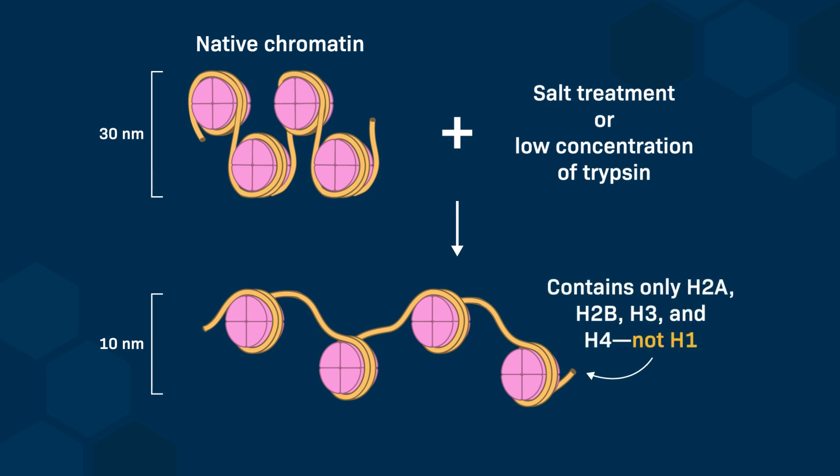This fiber contains DNA, histones H2A, H2B, H3, and H4, but does not contain the histone H1, which is released. We can therefore conclude that H1 is necessary for the stability of the 30 nm fiber.